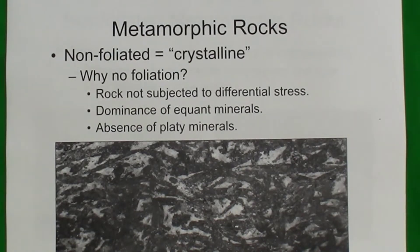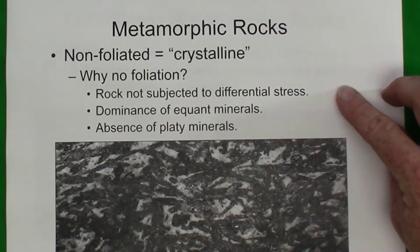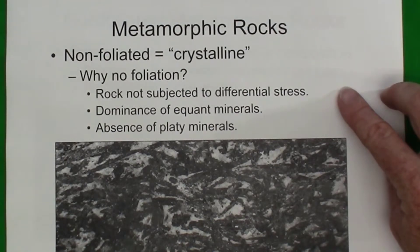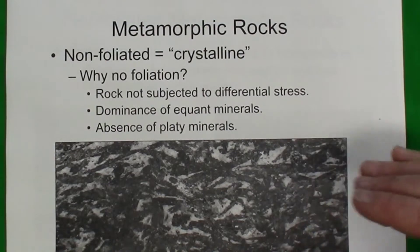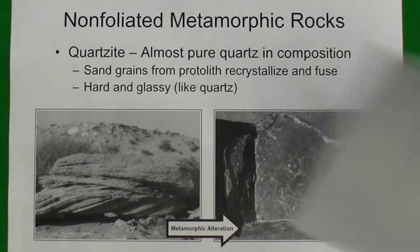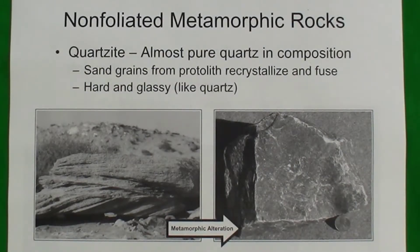Aside from foliated metamorphic rocks, there are crystalline rocks. Why would there be a metamorphic rock with no foliation? It depends — if the rock is not subjected to differential stress, such as being near a magma and only subjected to high temperatures, or if the minerals that form are dominated by equant minerals that are not elongated and therefore cannot line up parallel to each other. We'll look at a couple of examples of crystalline non-foliated rocks.